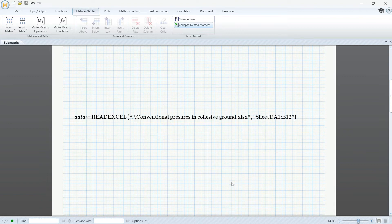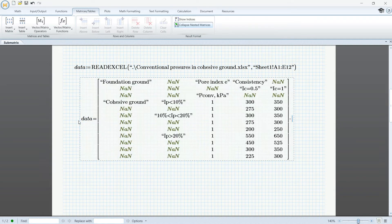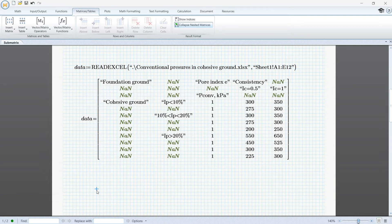This function is useful when you have to deal with data imported from an external file that contains things like strings or blank spaces. For example, if we evaluate this variable data that contains information imported from an Excel file, we can see that we also imported information that prevents us from using that data in a calculation. This is where the submatrix function can help.